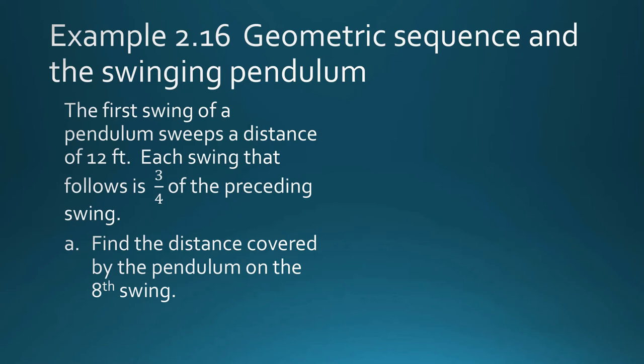So the first task is to find the distance covered by the pendulum on the 8th swing. This is like computing for a sub n. It is equal to a sub 1 times r raised to n minus 1. So n is 8, r is 3 fourths, and our first term is 12. So let us just apply our formula. So a sub 8 is equal to 12 times 3 fourths raised to 7. You can use your calculator here. So it's going to be equal to 1.6 feet. On the 8th swing, it's going to be 1.6 feet.